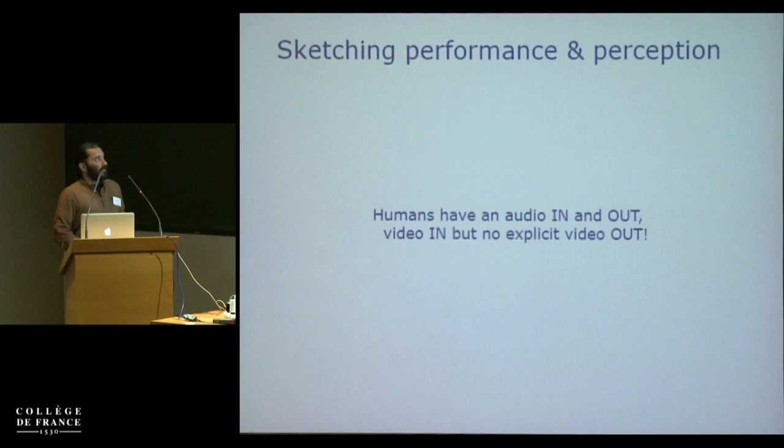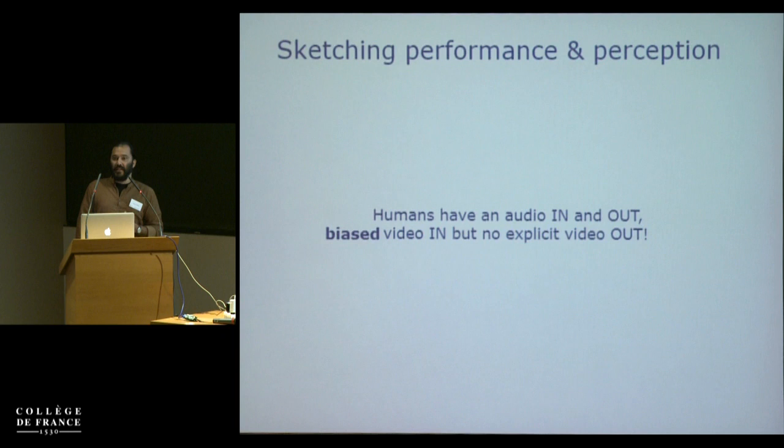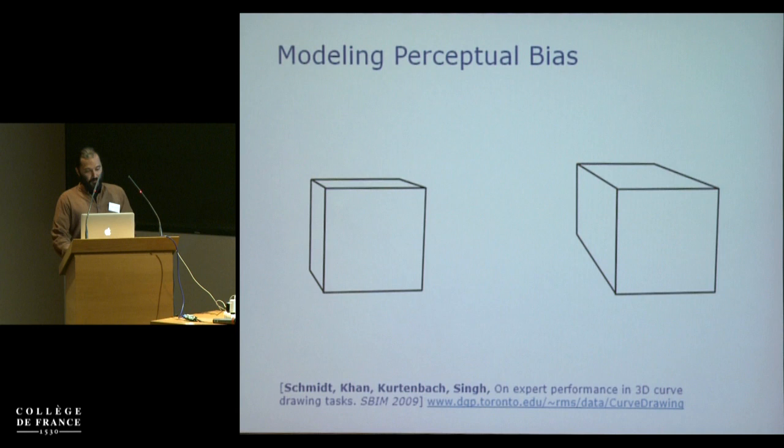Following up on a related point: humans have audio-in and audio-out, and we have video-in, but no video-out. But there's another problem — our video-in is actually biased. We need to take that bias into consideration when we build modeling systems and rendering systems going forward.